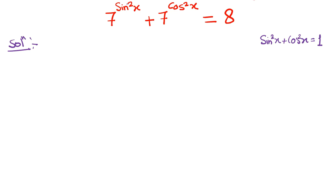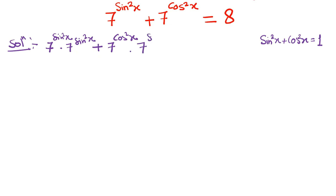We will multiply by 7^(sin²x). Here we get sin²x + cos²x, then multiply both sides by 7^(sin²x). So it will be 7^(sin²x) + 7^(cos²x) · 7^(sin²x) equal to 8 · 7^(sin²x). We multiplied both sides by 7^(sin²x).